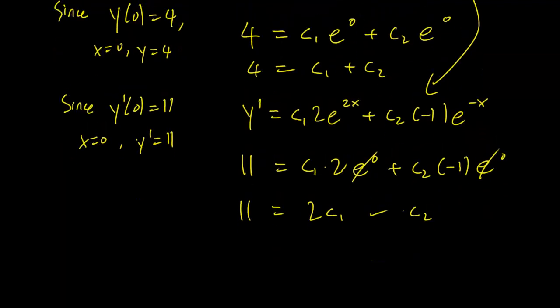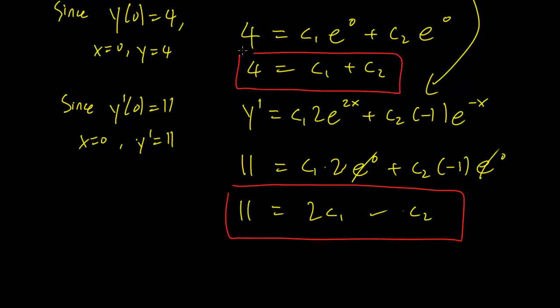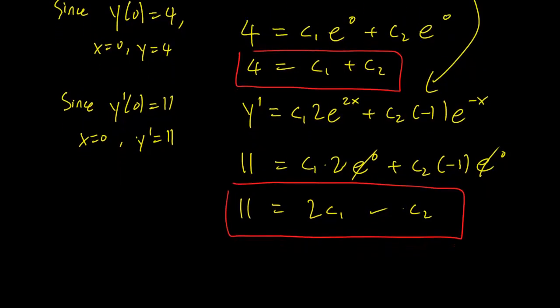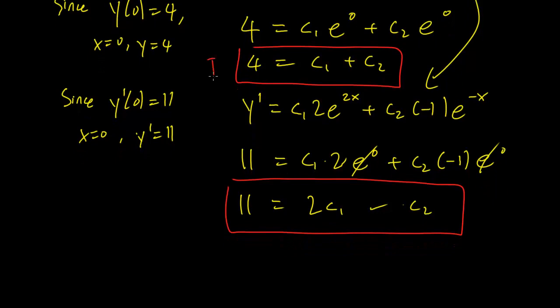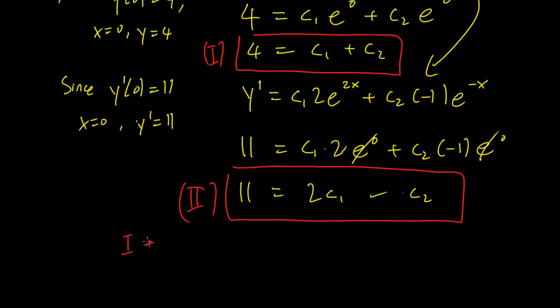So we have our two pieces of information here. We have this equation and this equation. So two equations in two variables means you can solve for c1 and c2. Let's call this equation 1 and let's call this equation 2. So 1 plus 2 gives us the equation 15 equals 3c1 because the c2 is cancelled out. And this gives us c1 equals 5.